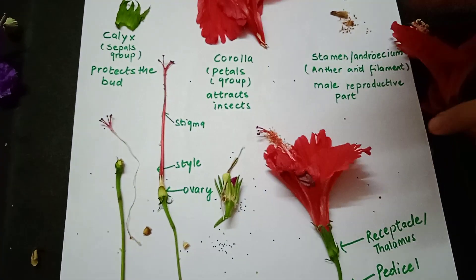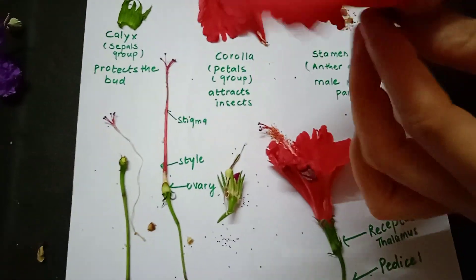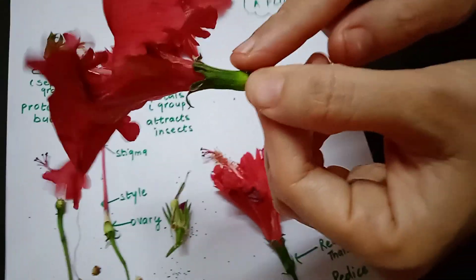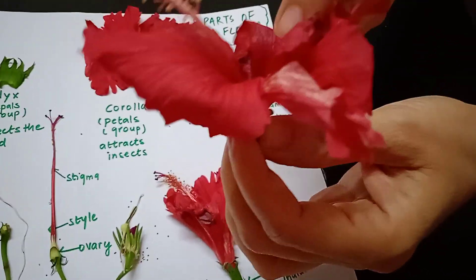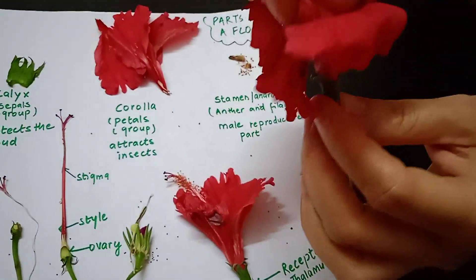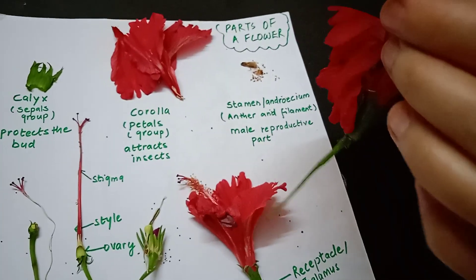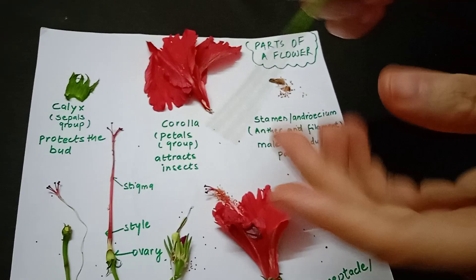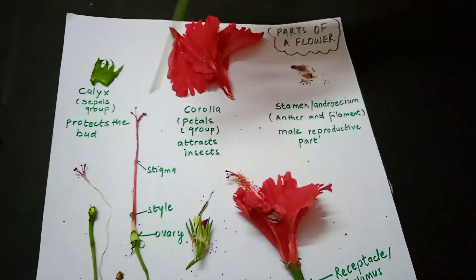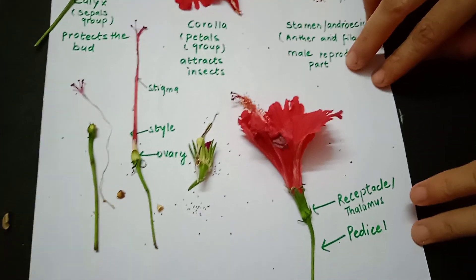So the four whorls of a flower are: first calyx, second corolla, third stamen, and fourth carpel. Now let's understand two more terms in the parts of a flower.